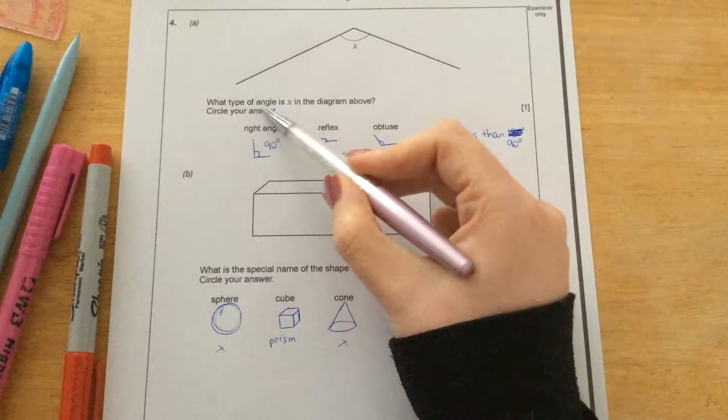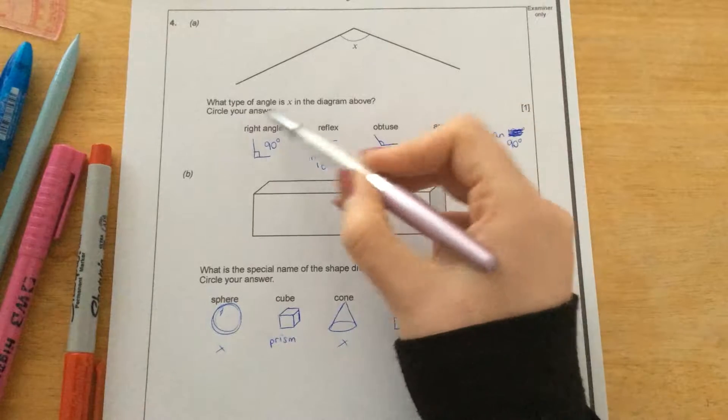Question four, part A. What type of angle is X in the diagram above? Circle your answer.